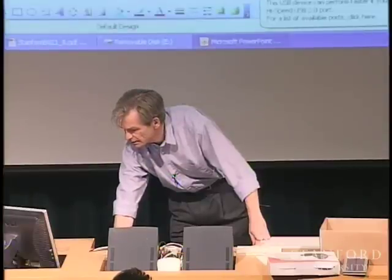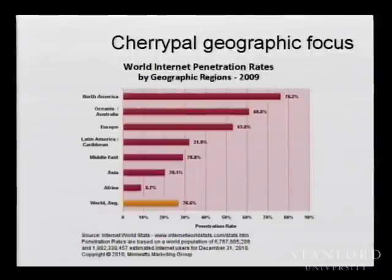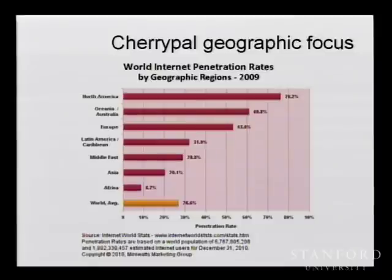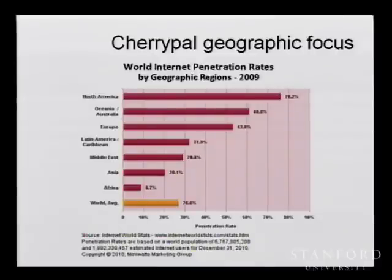I noticed earlier that the graphics are not displaying, but I think we can do it without. In terms of our geographic focus, this is the penetration of internet users worldwide, and our focus is basically the reverse order — bottoms up: Africa, Asia, and all the other countries. It's almost like unemployment statistics: 76% have access to the internet in North America, but the bad news is still that 24% do not.